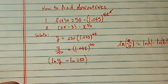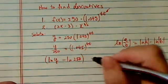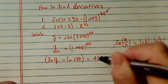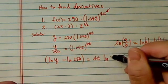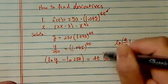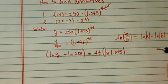Technically we should put the absolute value on it. Anyway, so back over here, 4t comes down here, and I have natural log of 1.045, which happens just to be a number.